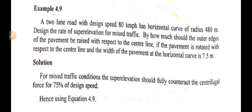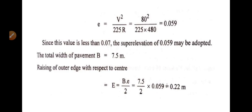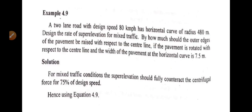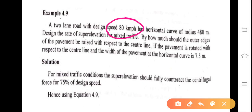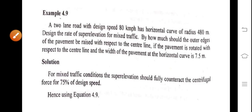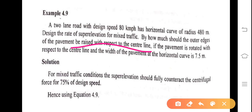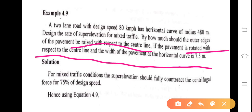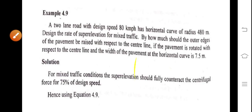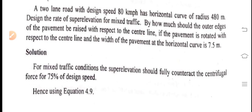A two-lane road with the design speed of 80 km/h has a horizontal curve of radius 400 meters. Design the rate of super elevation for mixed traffic flow. Since it is mixed traffic flow, you have to design by how much the outer edge of the pavement should be raised with respect to the center line, if the pavement is rotated with respect to the center line and the width of pavement at the horizontal curve is 7.5 meters.